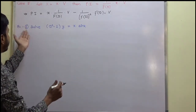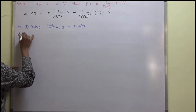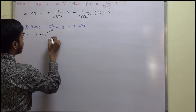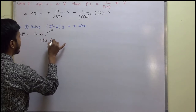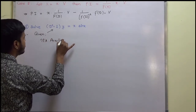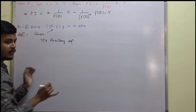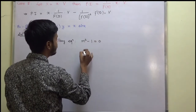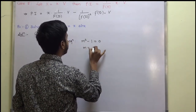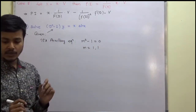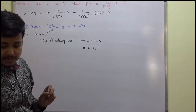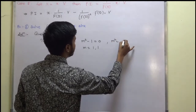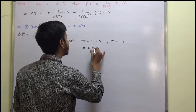Let us see a problem on this. We write down the auxiliary equation by putting D equal to m, giving m² minus 1 equal to 0. So m² equals 1, meaning m equals plus or minus 1 — not 1, 1 repeated, but plus and minus 1.